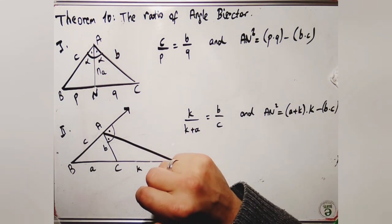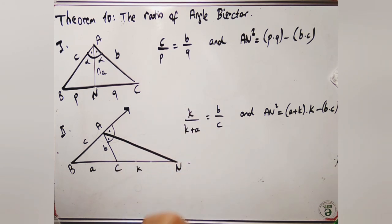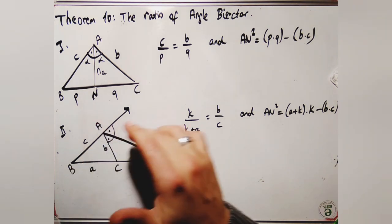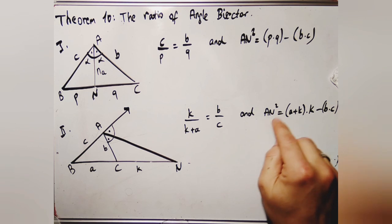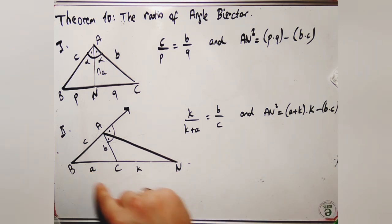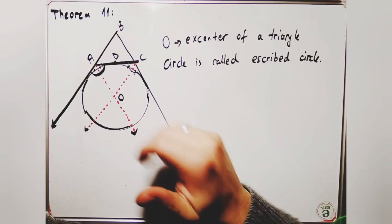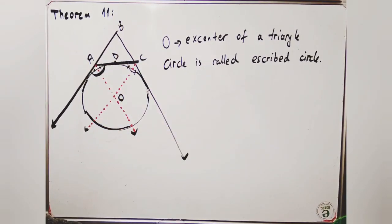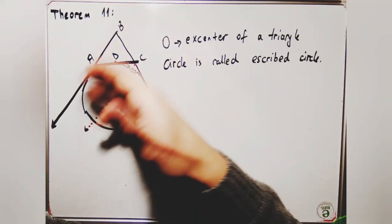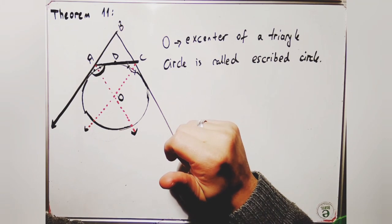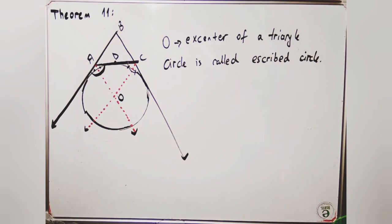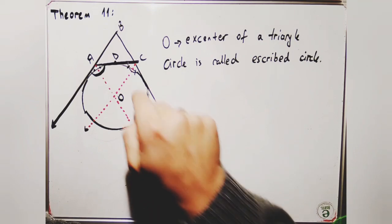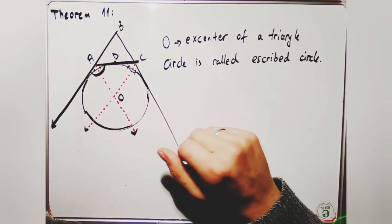For Theorem 11, there is also a theorem for the exterior angle bisector. The ratio is k/(k + a) = b/c. To find the length of AN: AN² = (a + k) × k − b × c. When we extend the lines from A and C, we can use the exterior angle bisector. Their intersection point is called the excenter, and the circle is called the excircle.